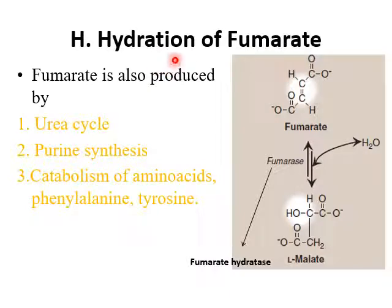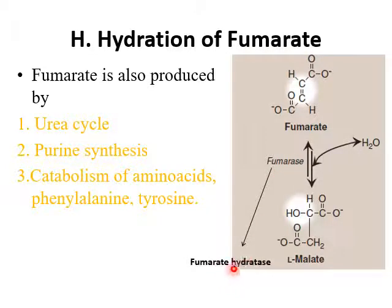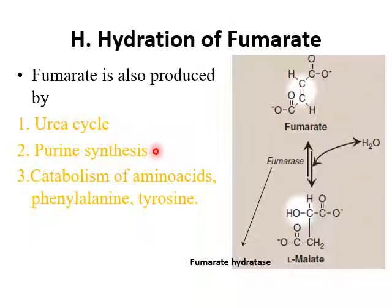The next step is hydration of fumarate. Fumarate is hydrated to malate with the help of fumarase, also called fumarate hydratase — water enters in this reaction. Fumarate can also be obtained from the urea cycle, from the synthesis of purines, and from the breakdown of the amino acids phenylalanine and tyrosine.